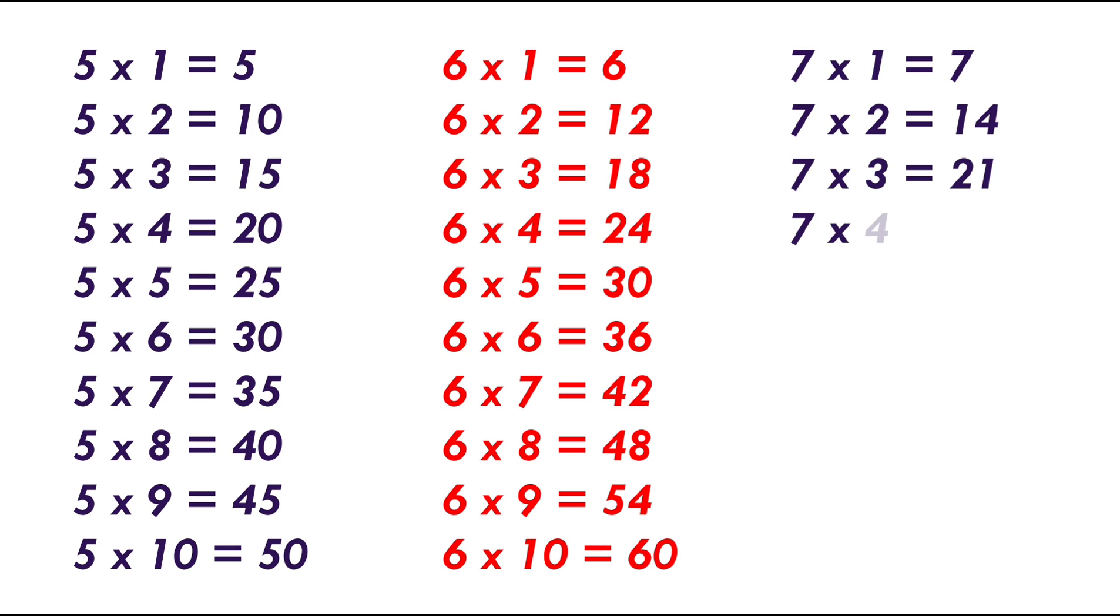7 times 3 equals 21, 7 times 4 equals 28, 7 times 5 equals 35, 7 times 6 equals 42.